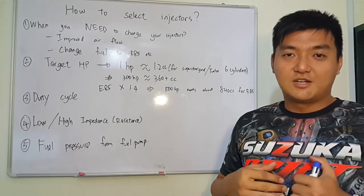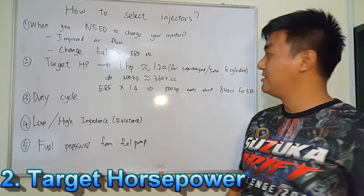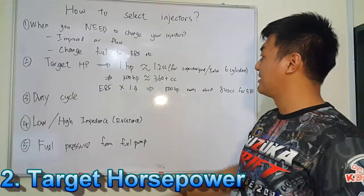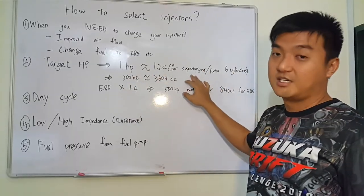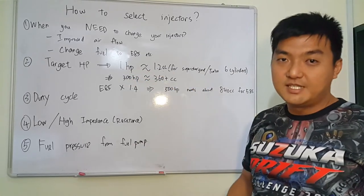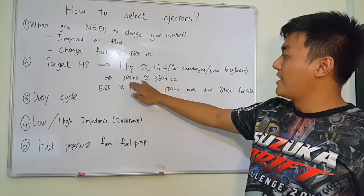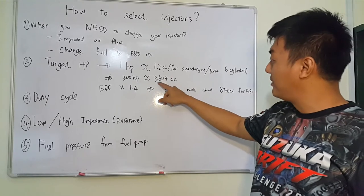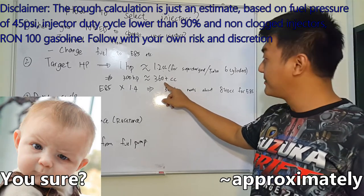So now it boils down to the question: what is your target horsepower? For a 6-cylinder turbocharged or supercharged engine, 1 hp is about 1.2cc. So what that means is, if I want a 300hp 6-cylinder engine, then I will need about 360cc injectors each.